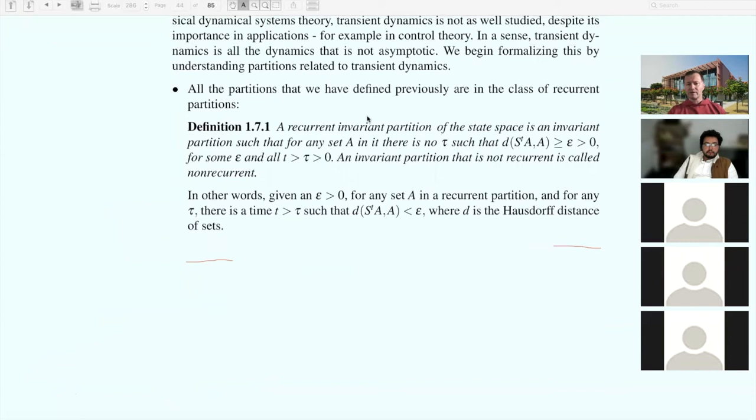So now we have this notion of recurrent partitions. Recurrent partitions are those that are not like the one I just drew. This would not be a recurrent partition because there is some time tau after which this initial set A is not going to return close to the original set.